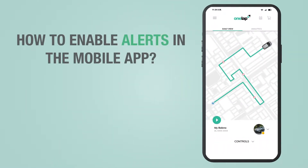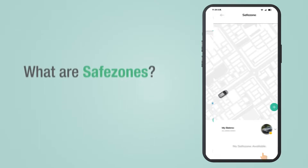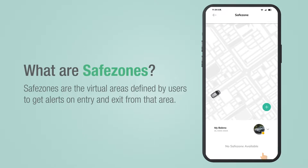How to enable alerts in the Onelap mobile application: Safe Zone, Over Speeding, Ignition, and Anti-Theft.